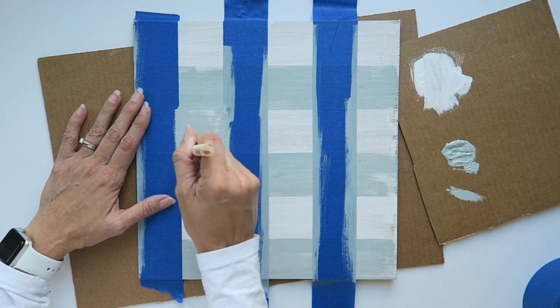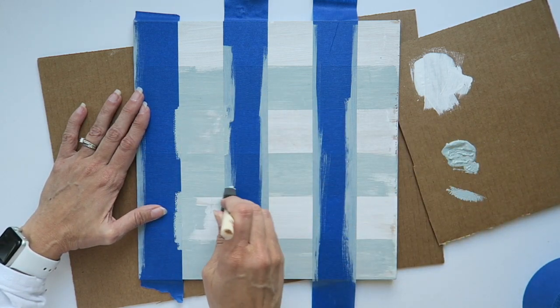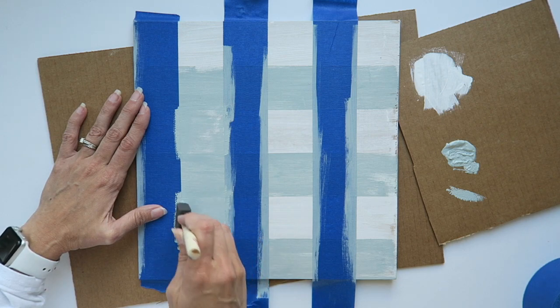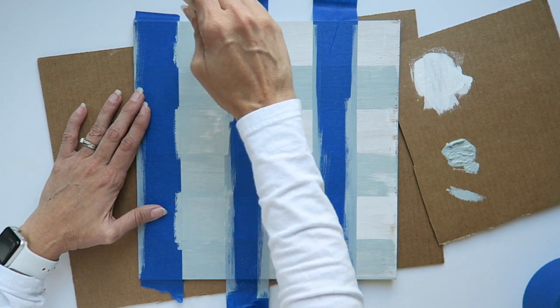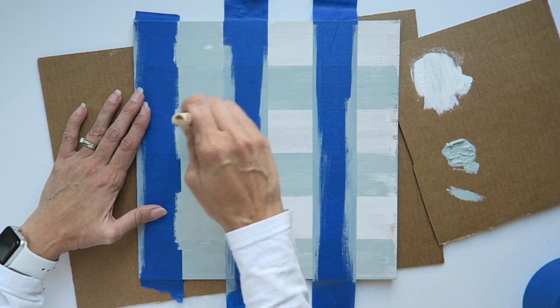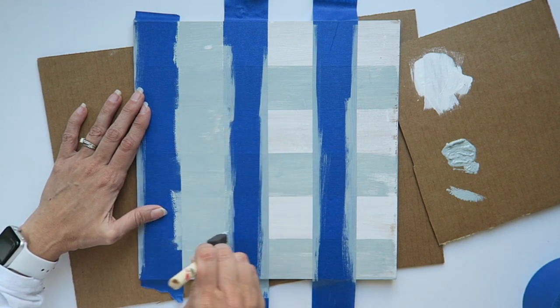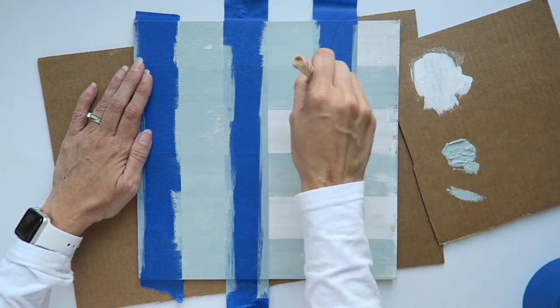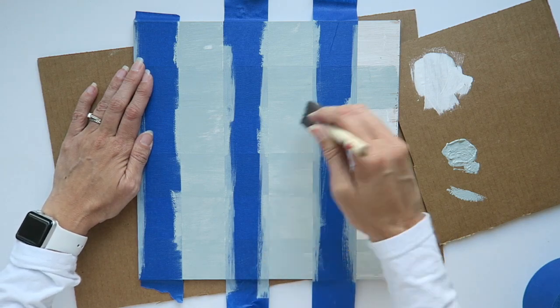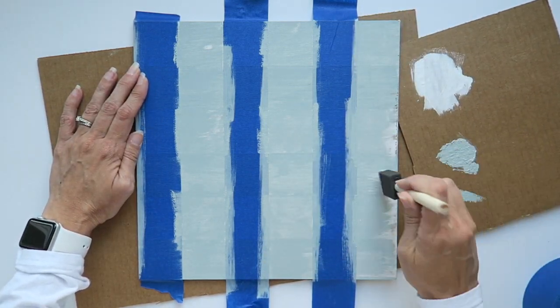I like to make sure my paint strokes are going in the same direction. So here, I am kind of pushing into the tape, but I'm trying just to dab on the edges of the tape and then paint in between. So you're going to cover all the area that is not taped off.